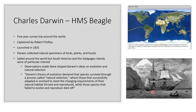The HMS Beagle is Darwin's ship. Darwin went on a five-year survey trip around the world. The ship was captained by Robert Fitzroy and launched in 1831. Darwin collected natural specimens of birds, plants, and fossils. South America and the Galapagos Islands were of particular interest to Darwin — observations made there shaped his ideas on evolution and natural selection. Darwin's theory of evolution declared that species survived through a process called natural selection, where those that successfully adapted to meet the changing requirements of their natural habitat thrived and reproduced, while those that failed to evolve died off.